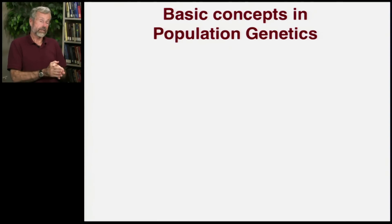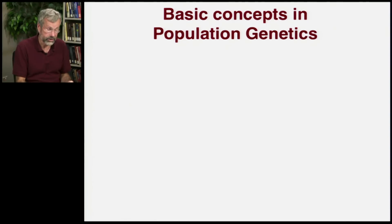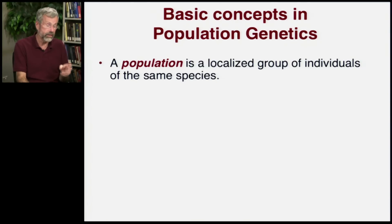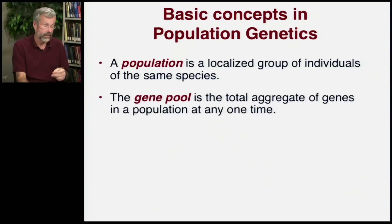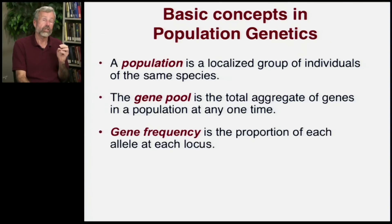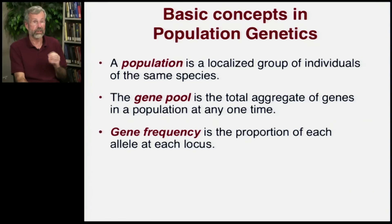We need some basic concepts to be able to tackle population genetics. First, what do we mean by population? A population is a localized group of individuals of the same species. What is a gene pool? The gene pool is the total aggregate of genes in a population at any one time. And gene frequency is the proportion of each allele at each locus.